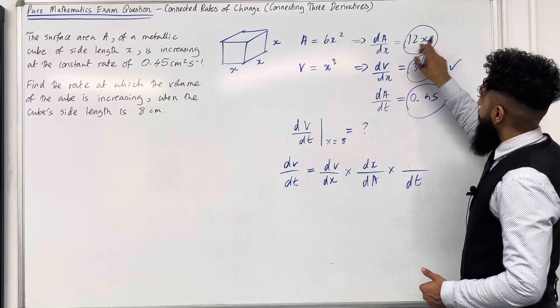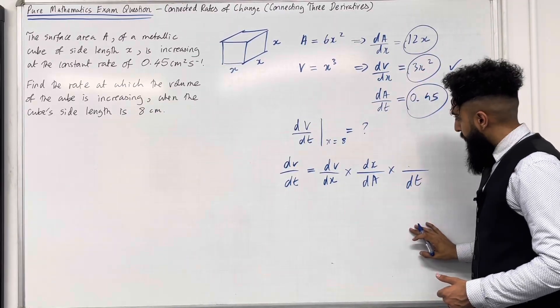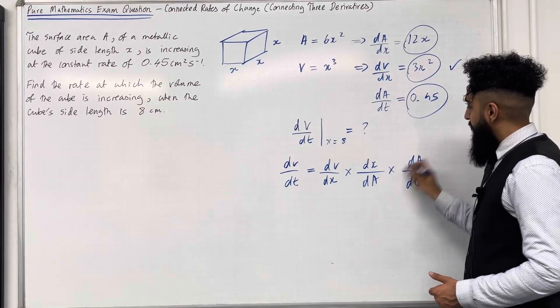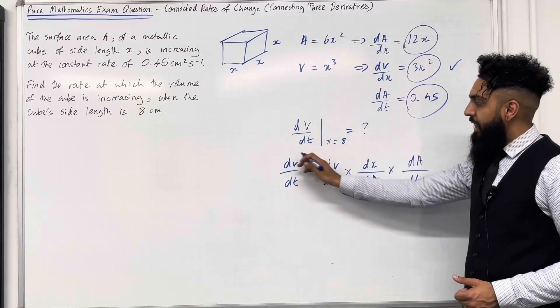I know that dA over dx is 12X. dx over dA is the reciprocal of that. And then I've got dA over here because the dAs have to cancel. So the dx is cancelled, the dAs cancel, giving us dV over dt.